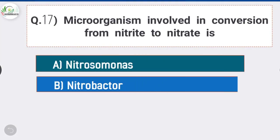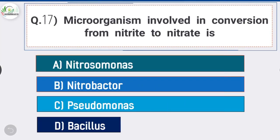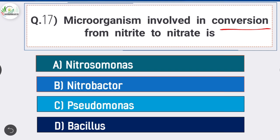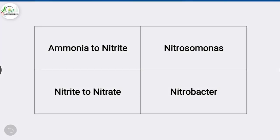Question number 17: Microorganism involved in conversion of nitrite to nitrate is? Answer is option B, Nitrobacter. Ammonium is converted to nitrite by Nitrosomonas, and nitrite is converted to nitrate by Nitrobacter.